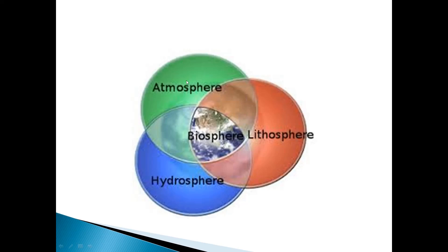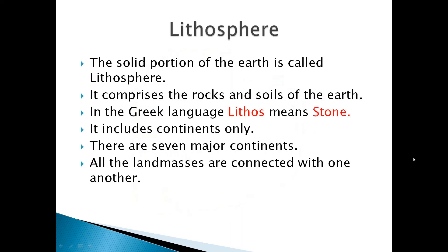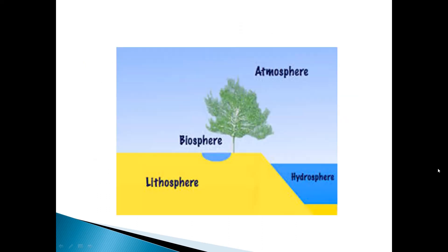These are the four major domains found on the earth: atmosphere, hydrosphere, lithosphere, and wherever these three domains meet — the narrow zone where all three layers overlap — we call it the biosphere. Lithosphere is the solid portion of the earth, the hard portion, which consists of the crust and comprises the rocks and soils of the earth. In the Greek language, 'lithos' means stone.